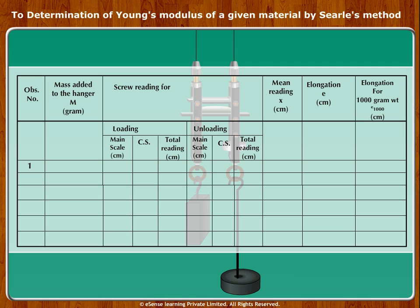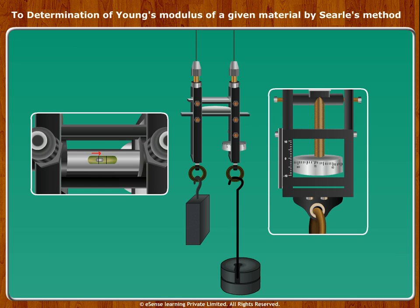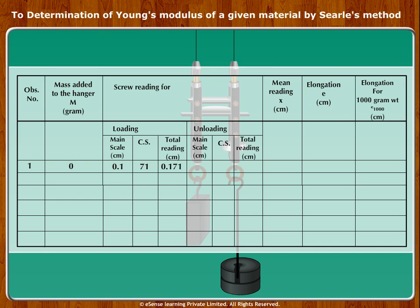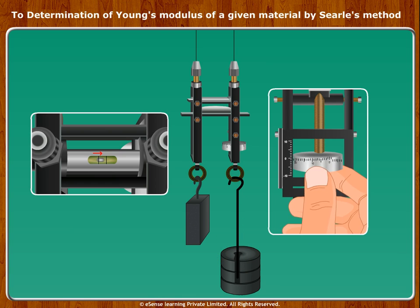Observation 1: Mass M equals 0 as there is no weight added to the hanger. Main scale reading: 0.1 cm. Add a weight of 500 grams to the hanger on the experimental wire. Wait for about 1 minute as the increase in the length of the wire occurs rather slowly. Observe the bubble in the spirit level has moved from the center. Rotate the screw so that the air bubble is brought to the center. Note the readings when the air bubble becomes steady — this is Observation 2.